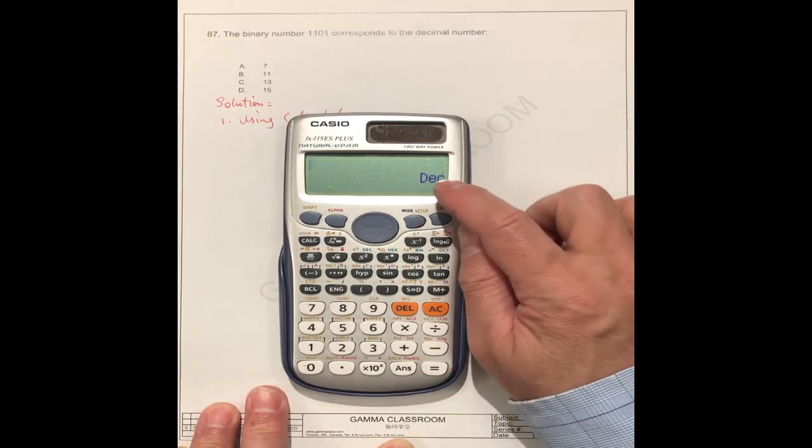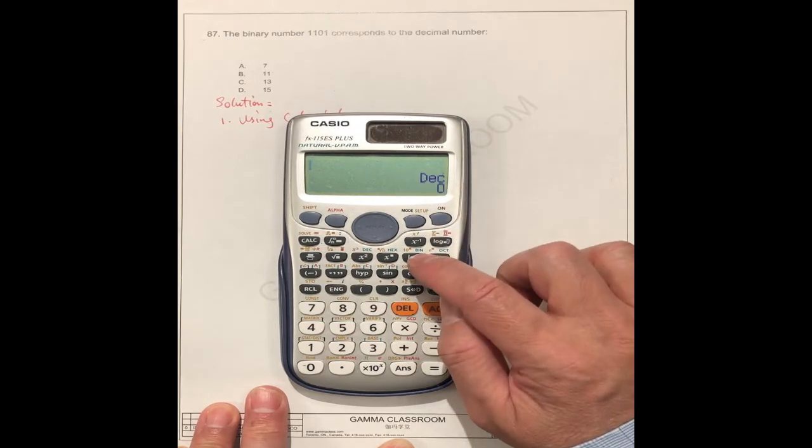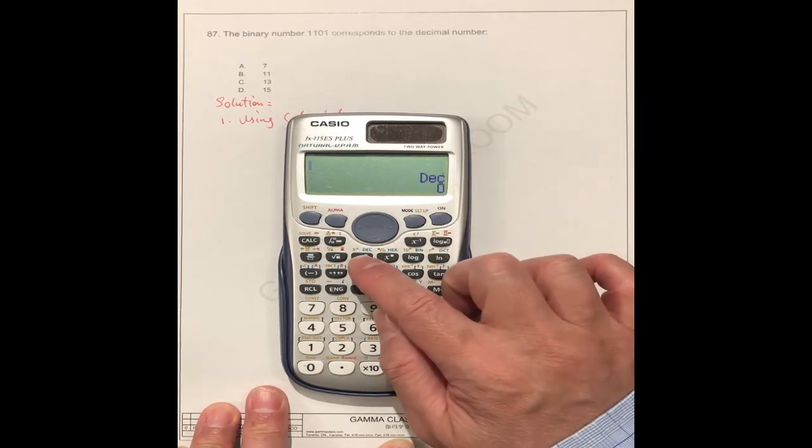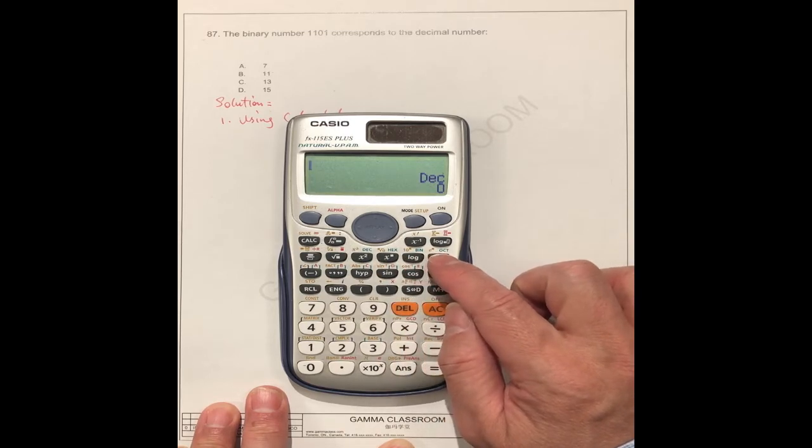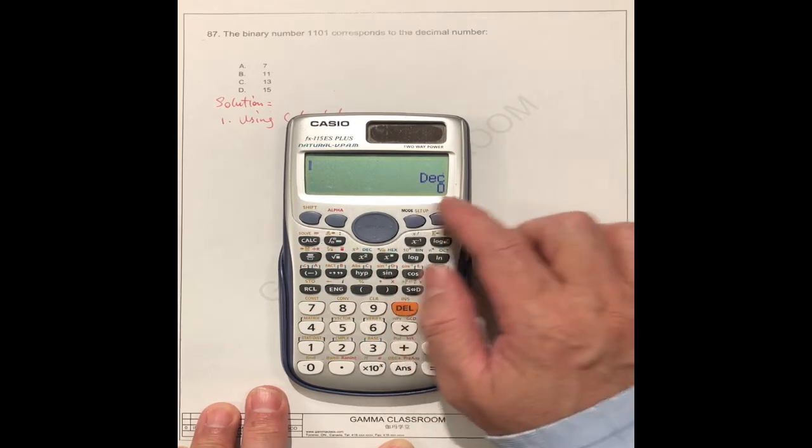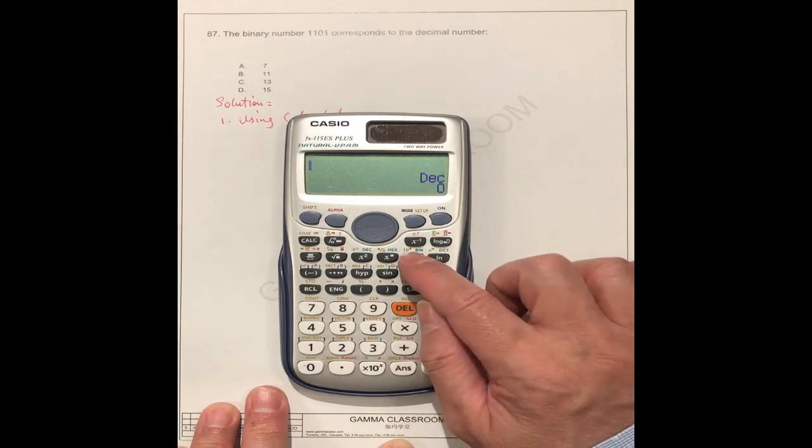You see, this is decimal. You can choose anything. Decimal, you see here. Decimal, hexadecimal, binary, octal. You can, at this situation, you can choose anything.